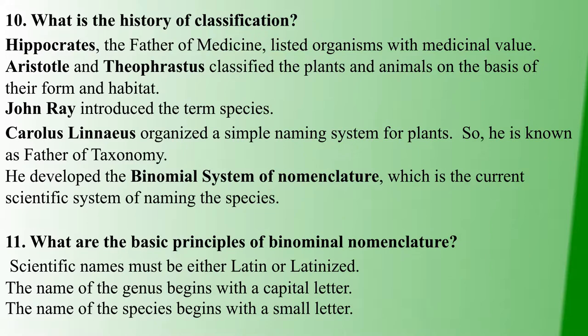Aristotle and Theophrastus classified animals and plants based on form and habitat. John Ray introduced the concept of species — genus and species. Carolus Linnaeus gave names to plants and is known as the father of Taxonomy. He proposed the binomial system of nomenclature.